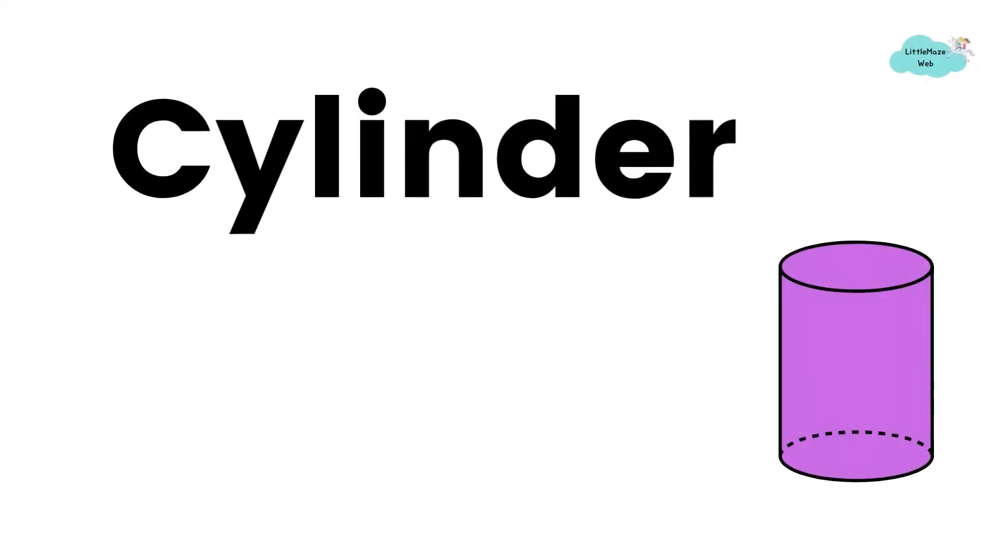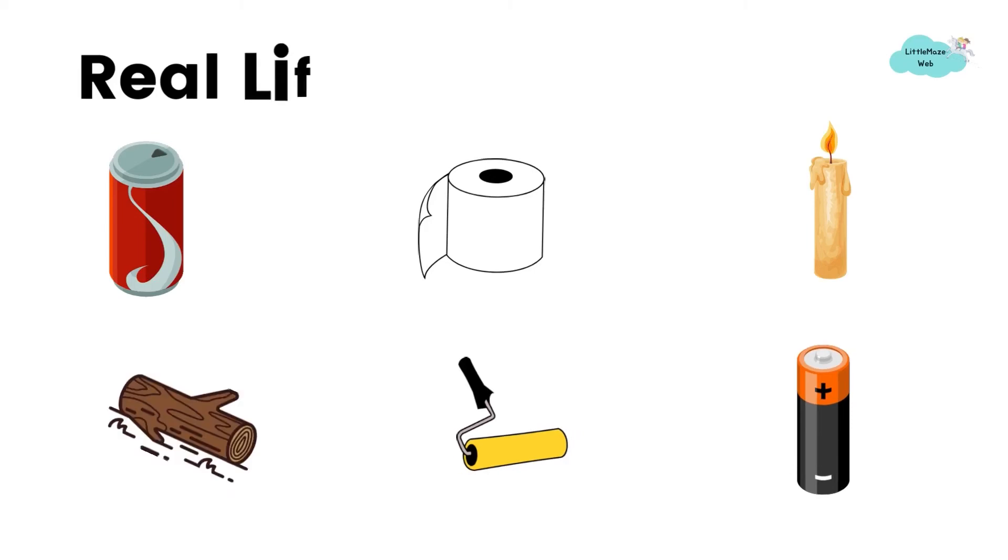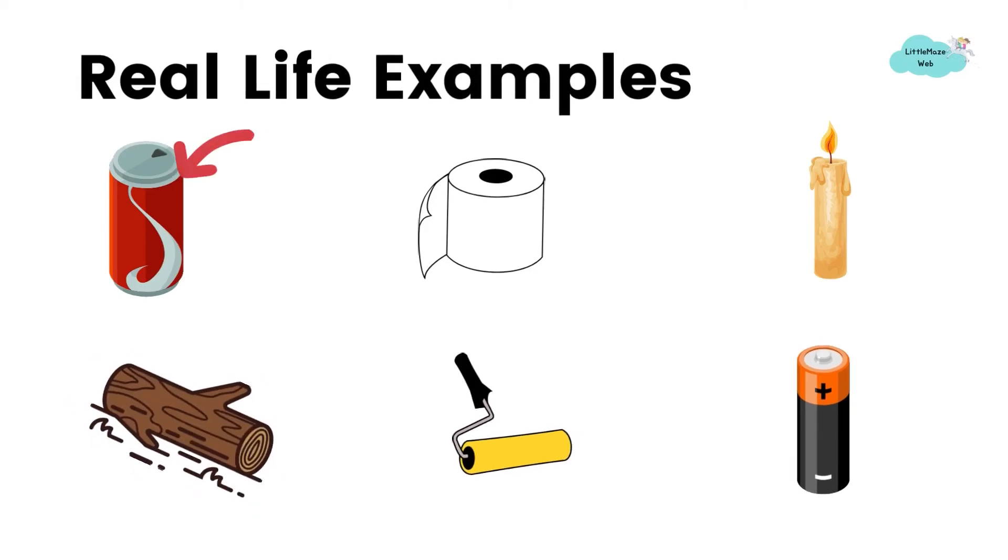This is a cylinder. Real life examples of cylinder are can, toilet roll, candle, log, roller, batteries.